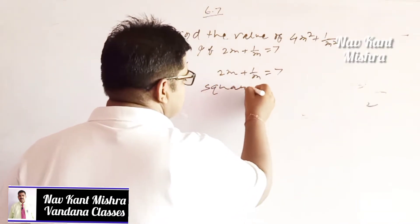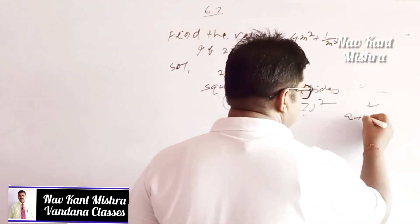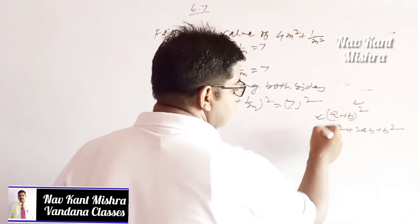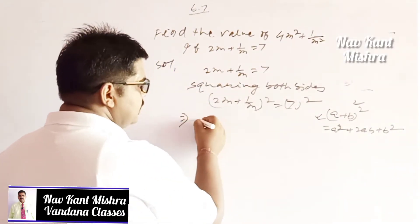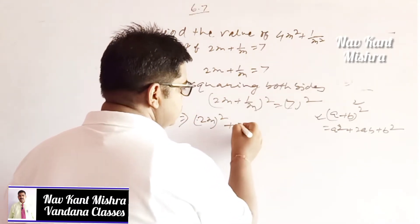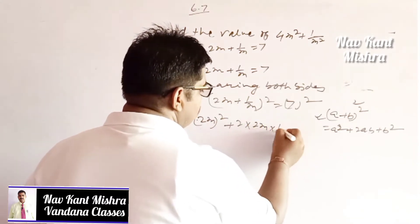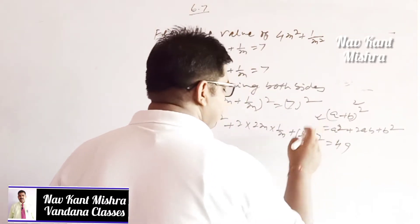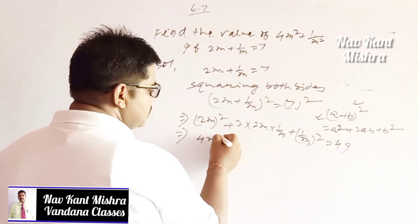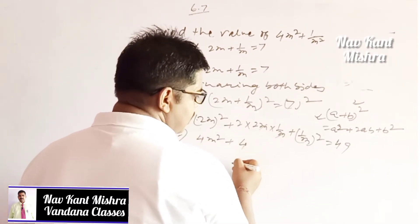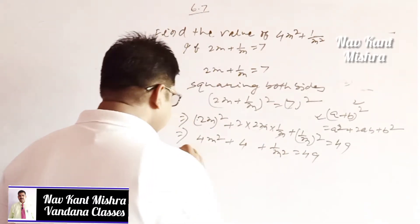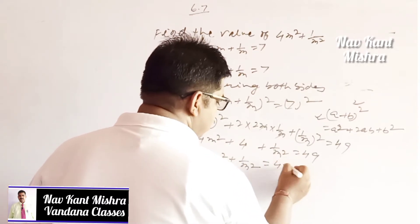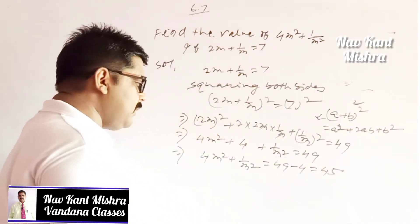You need to square both sides, which is based on the formula a plus b whole square equals a square plus 2ab plus b square. So 2m whole square plus 2 into 2m into 1 upon m plus 1 upon m whole square equals 49. This gives 4m square plus 4 plus 1 upon m square equals 49, and by rearrangement, 4m square plus 1 upon m square equals 49 minus 4, which equals 45.